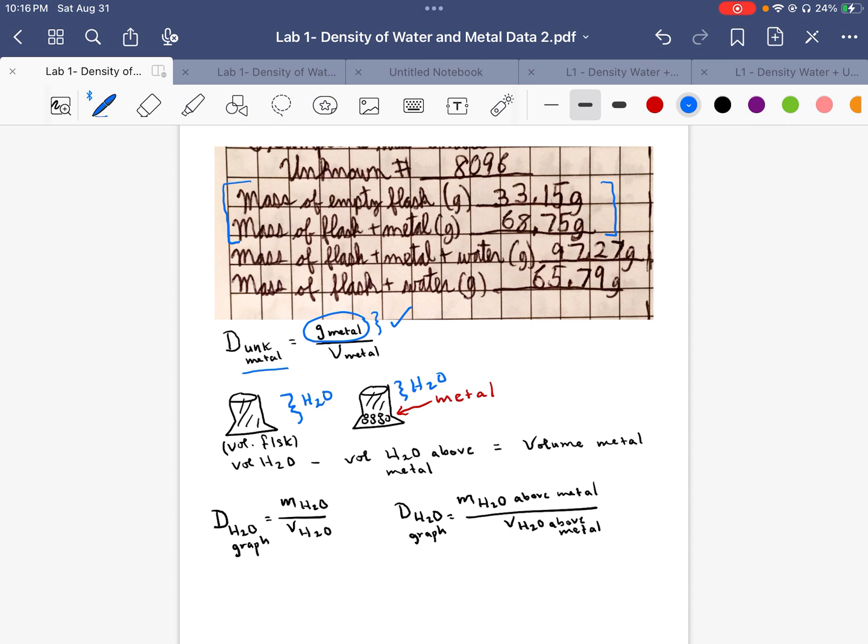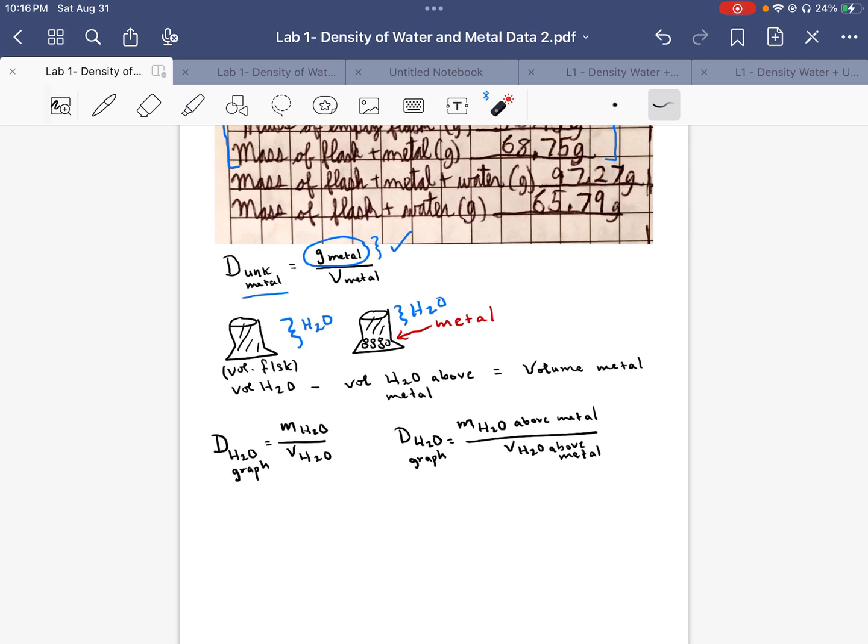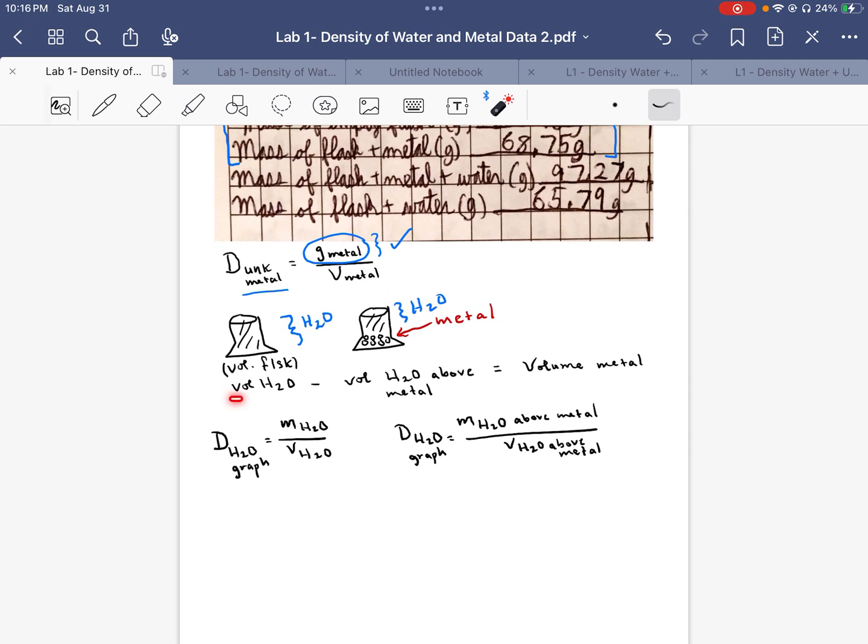What's a little more difficult though is actually finding the volume of the metal. So when we look at that we have to look at two pieces. We have to look at what is the actual volume that the water ends up filling in the flask. And then we have to look at how much volume is there to the water filling it above the metal. And if we subtract those two, if we can find out what they are, then that's going to give us the volume of the metal.